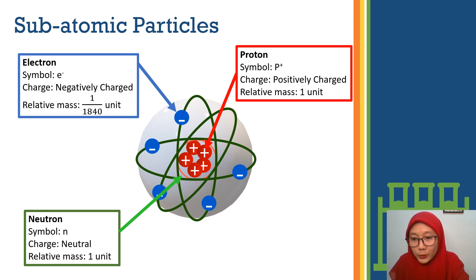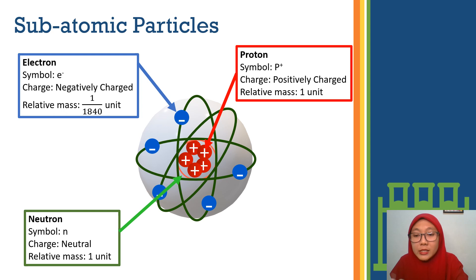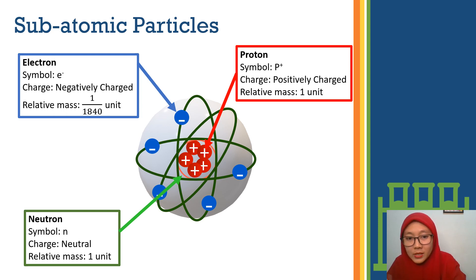At the middle, we can see a proton. The symbol is P positive. Proton is a positively charged particle and the relative mass is 1 unit. The neutron is neutral. The symbol is N and the relative mass is also 1 unit.